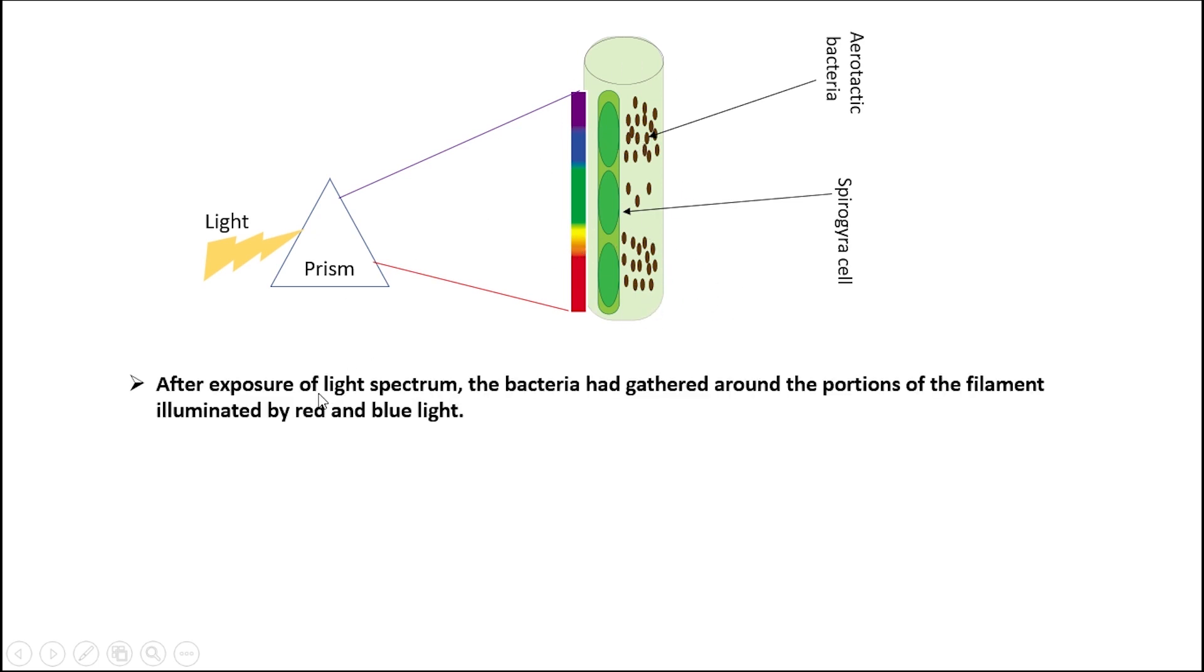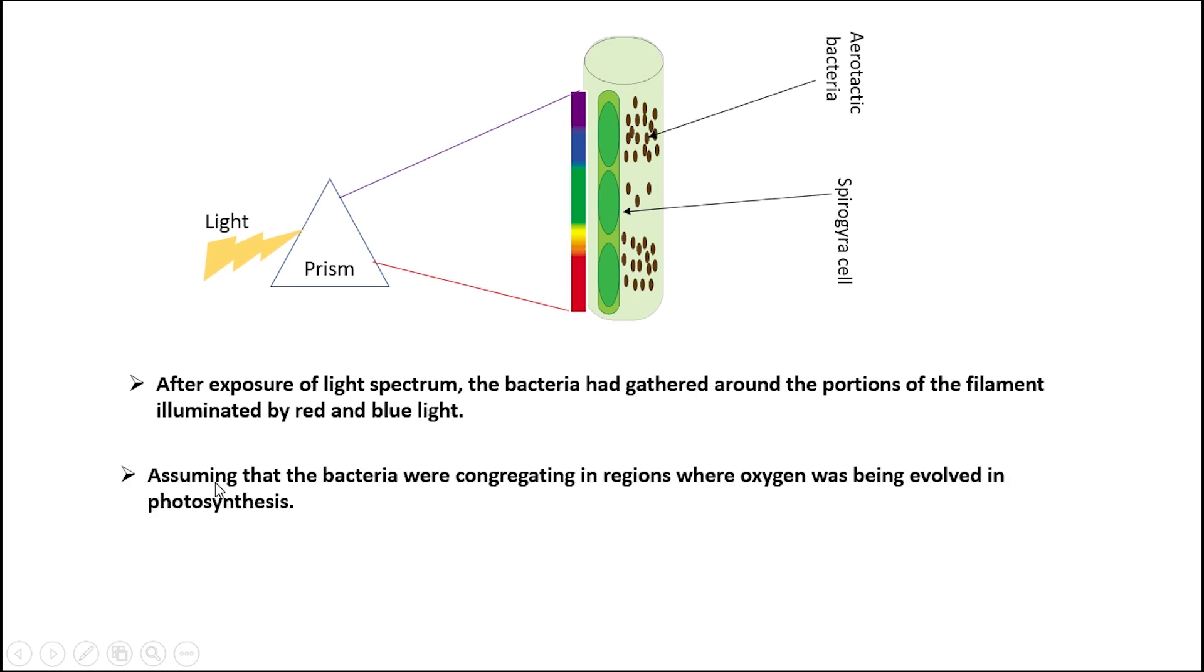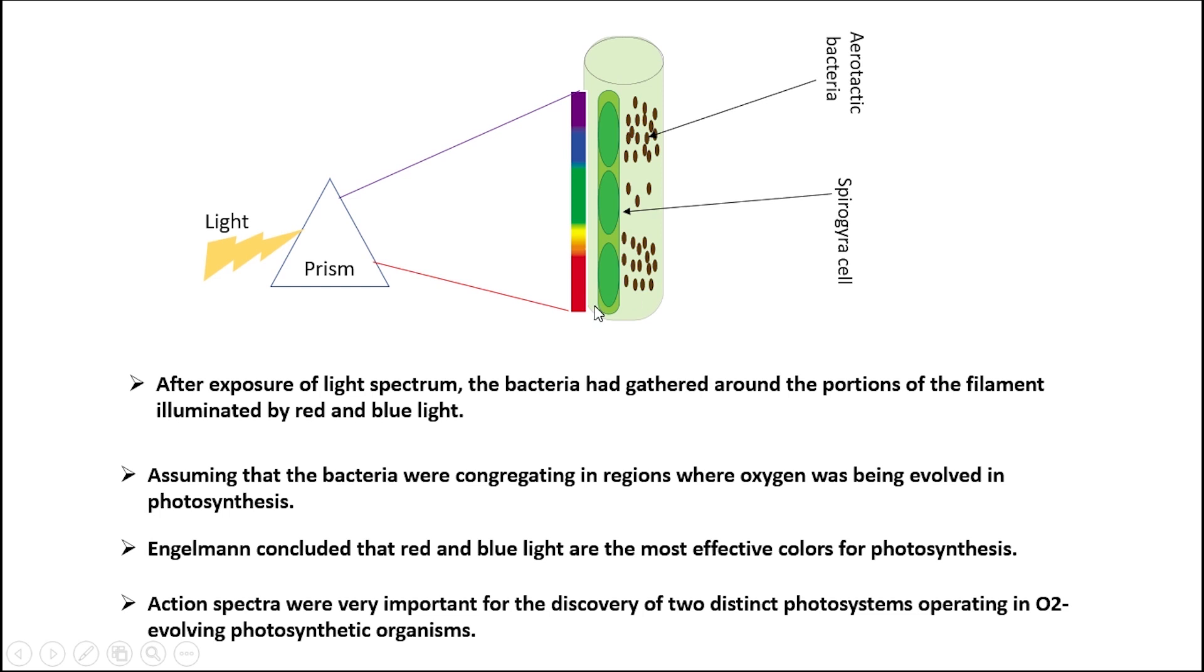So, Engelmann concluded that red and blue light are the most effective colors for photosynthesis. Action spectra were very important for the discovery of two distinct photosystems operating in oxygen evolving photosynthetic organisms.